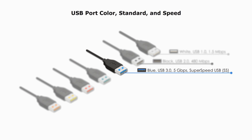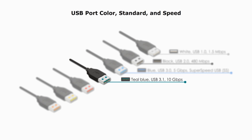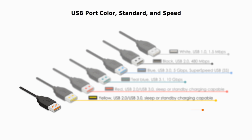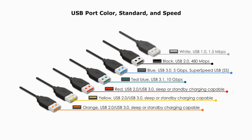USB 3.0 is also known as SuperSpeed USB. If you see the SS symbol on the top of a USB port or a connector, it means SuperSpeed USB 3.0. The teal blue color indicates USB 3.1. Its speed is up to 10 Gbps — twice as fast as USB 3.0. When you see a USB port or connector that is red, yellow, or orange, they are non-standard. This type of USB port can support USB 2.0, USB 3.0, or USB 3.1, but different manufacturers use different colors.